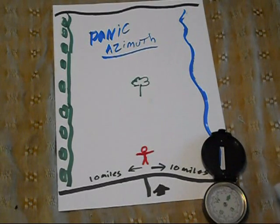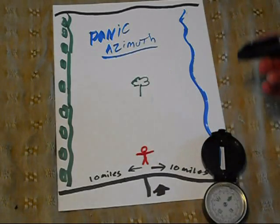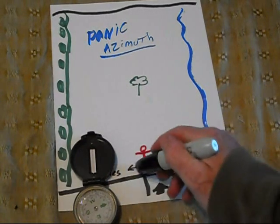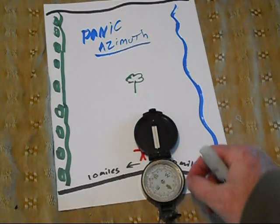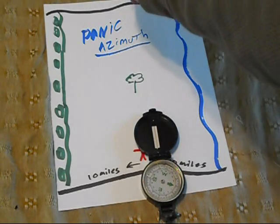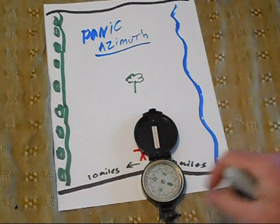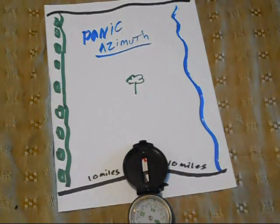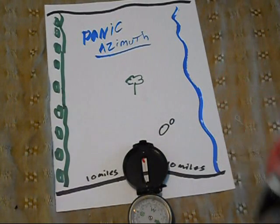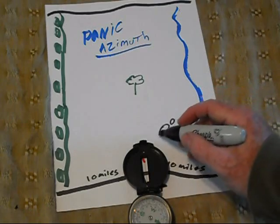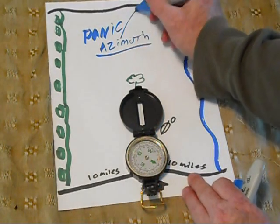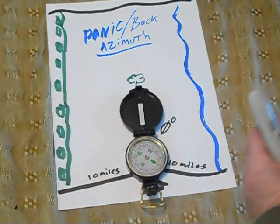To prevent myself from getting lost and losing my bearing — knowing what direction is what — I'm going to stand at the road before I even walk into the woods and shoot an azimuth for the direction I want to go. The azimuth is where you want to go. Let's say the azimuth is north, which is zero degrees. The panic azimuth — and another name for it is the back azimuth — though they're actually two different things, so let me explain both.